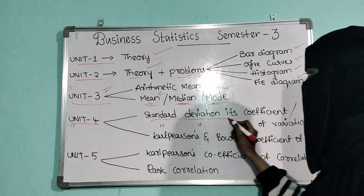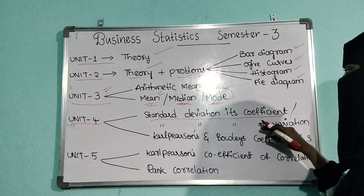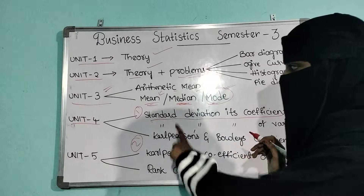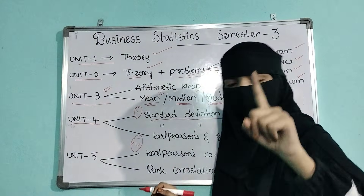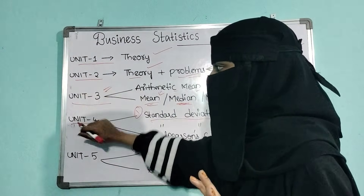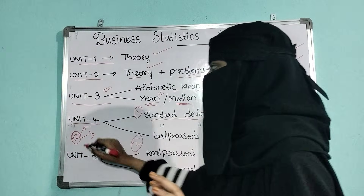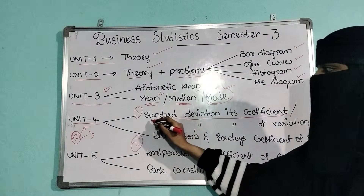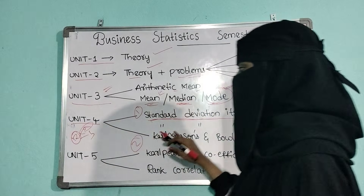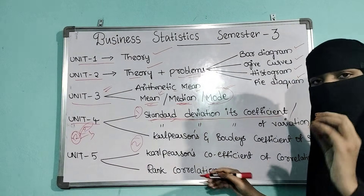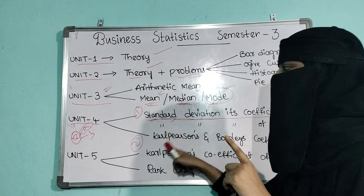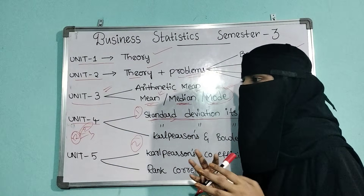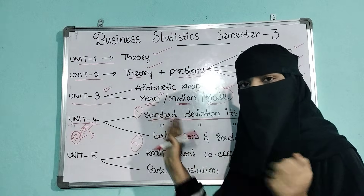From unit 4, you are having standard deviation and its coefficient of variation. The other part is Karl Pearson's and Bowley's coefficient of skewness. Out of these two, you can prepare any one because you will be having choice. In question 12, A will be from standard deviation and B will be from skewness. Karl Pearson's and Bowley's skewness is easy, and standard deviation is also easy. I will be uploading videos on both topics — standard deviation and Karl Pearson's and Bowley's skewness. Whatever you feel is easy, you can choose. If you can't remember more formulas, choose any one, but both are easy.